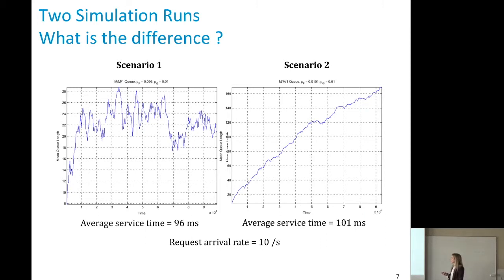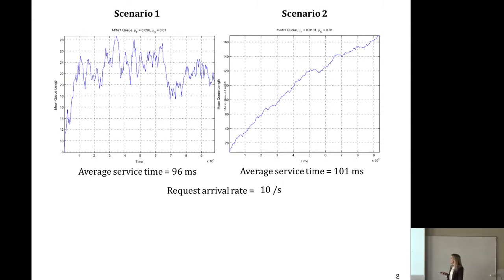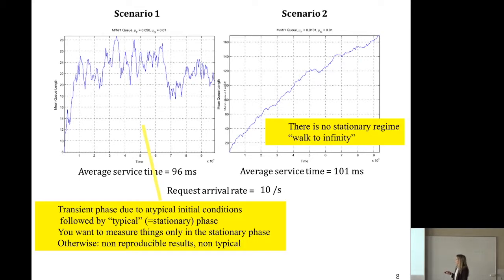In the second scenario, the arrival rate is higher than the service rate — requests arrive faster than the server can serve them. We observe that the queue length grows to infinity, so there is no stationary regime. The queue length is increasing all the time, and there are no oscillations.